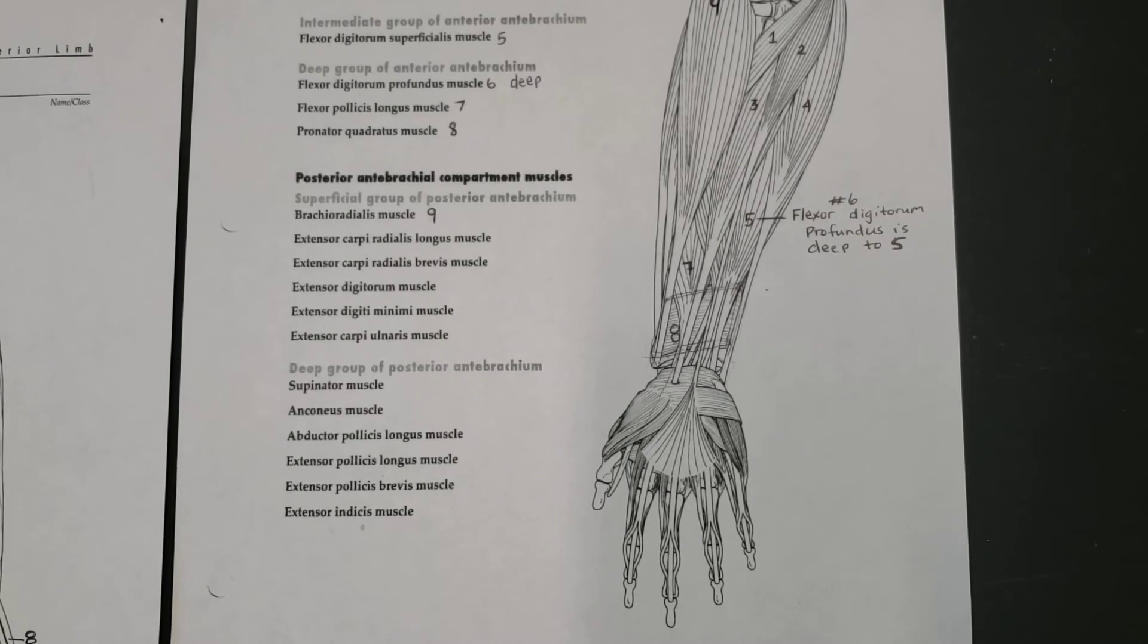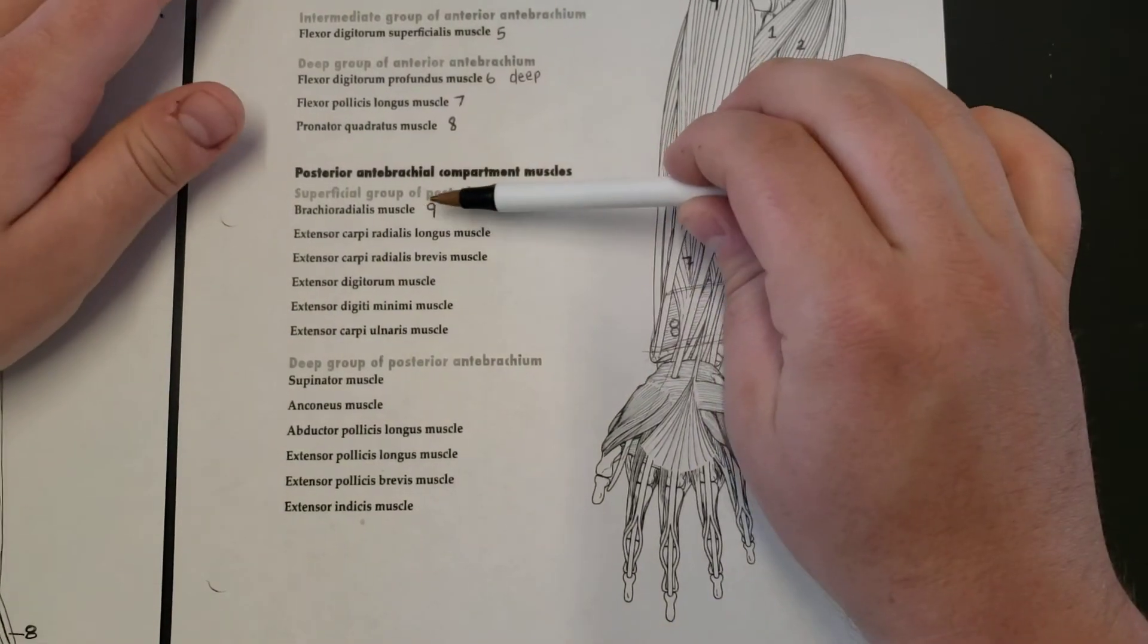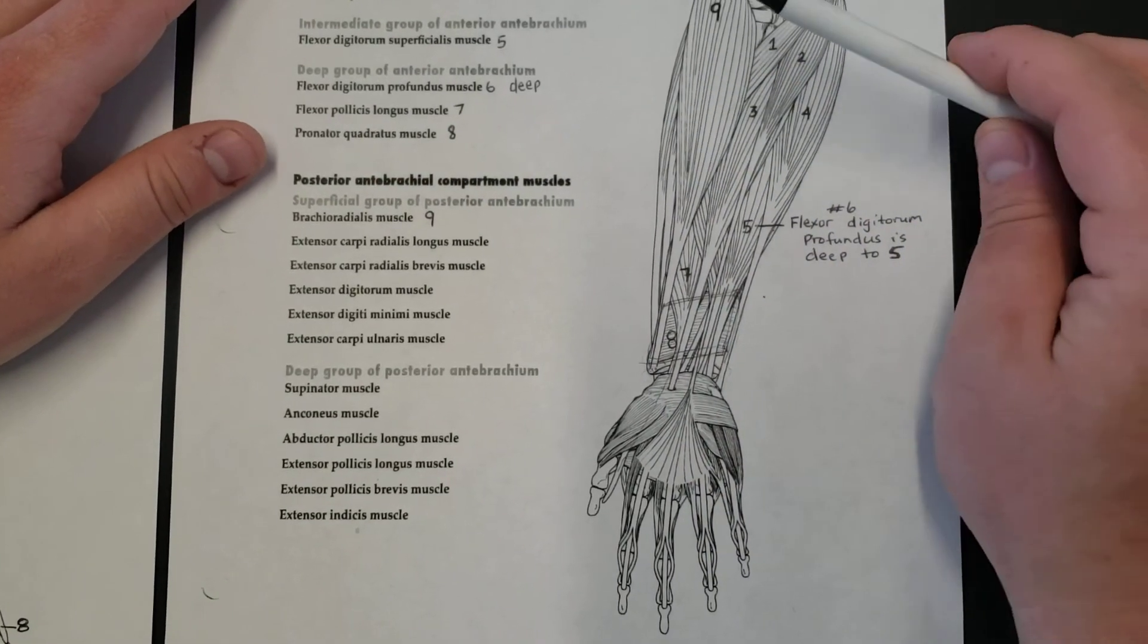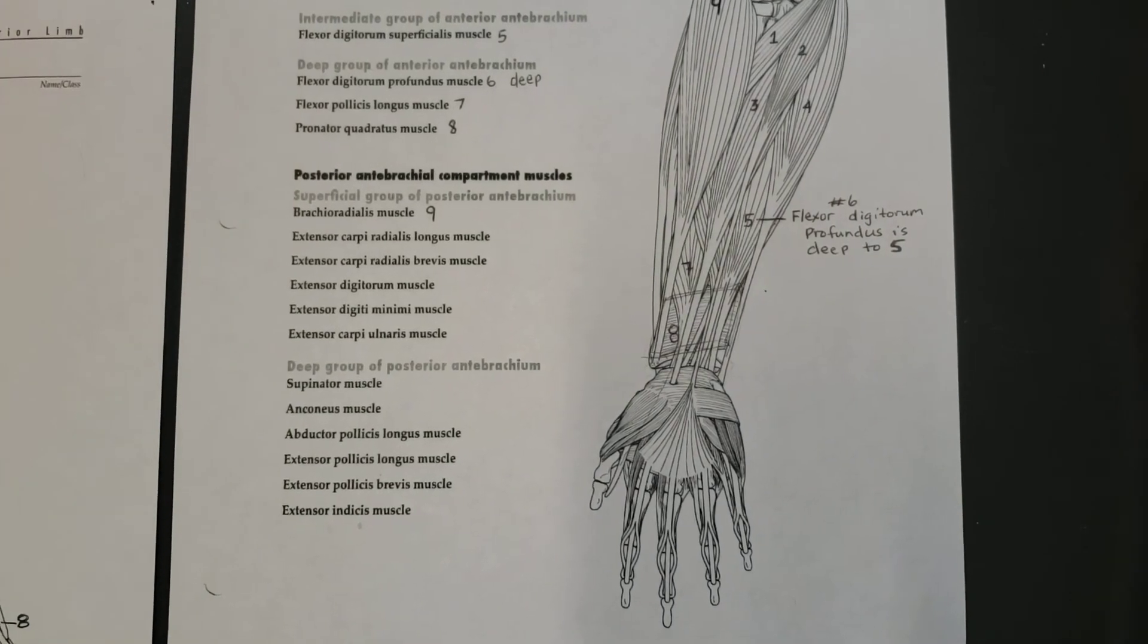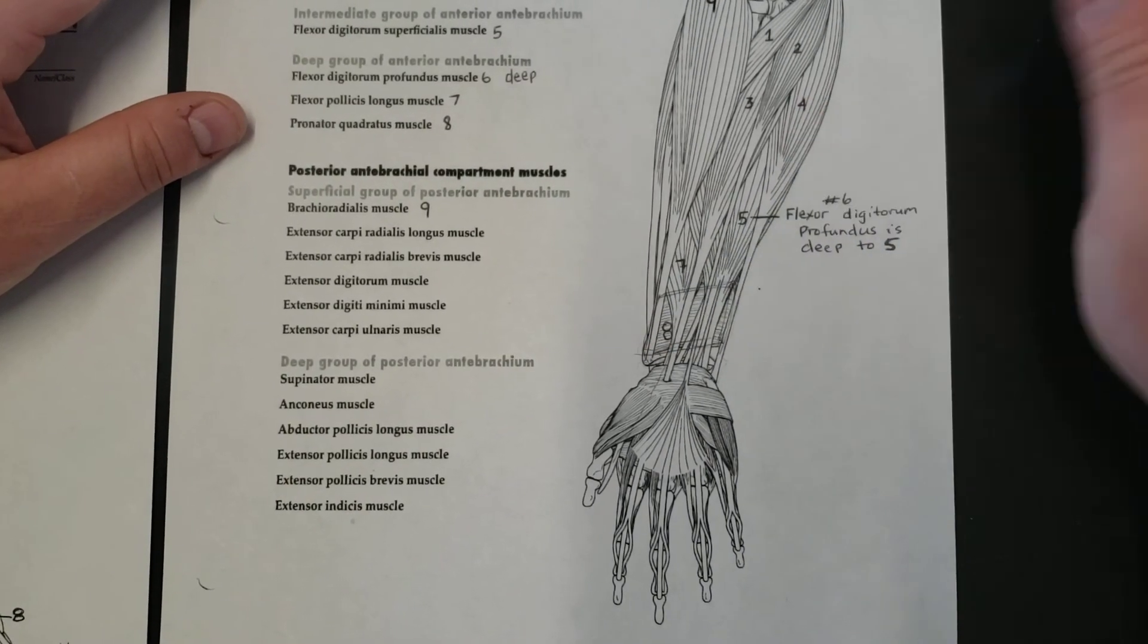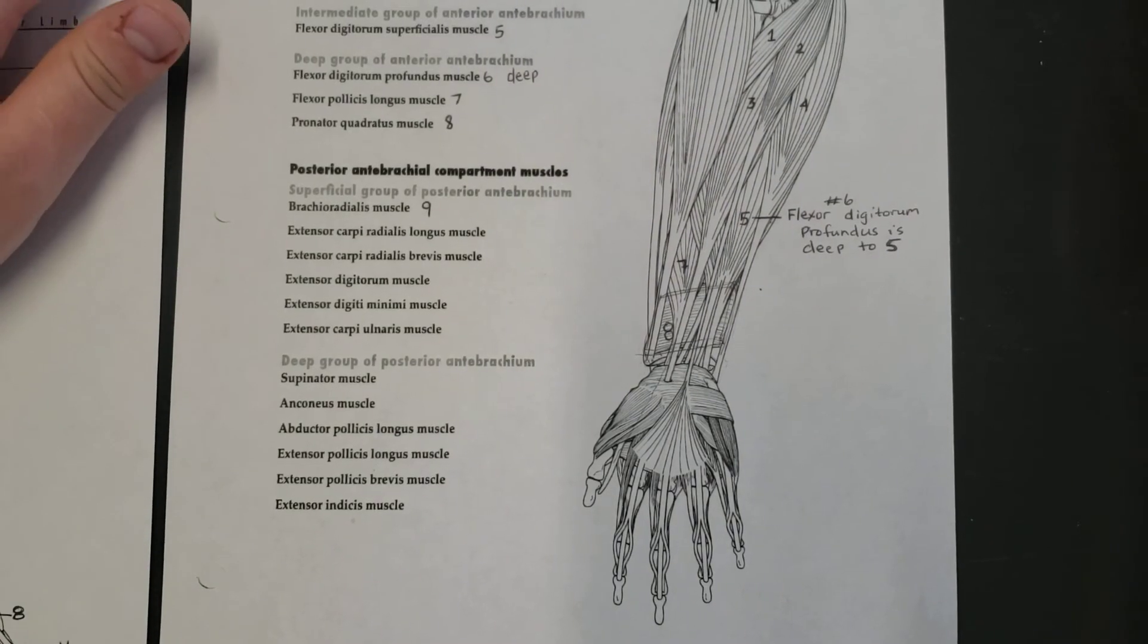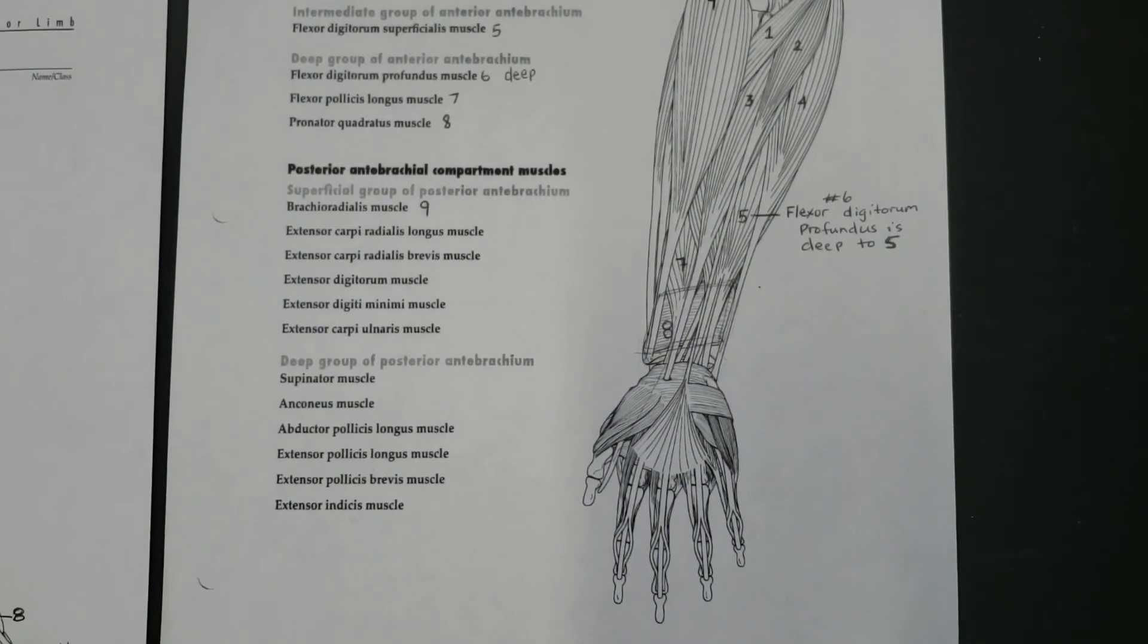Okay, moving on. Before we jump over to the other page, we have number nine which is your brachioradialis. This is part of the posterior compartment because it originates on the posterior side, but it crosses all over to the anterior and attaches down through here on the, I believe, the radius.